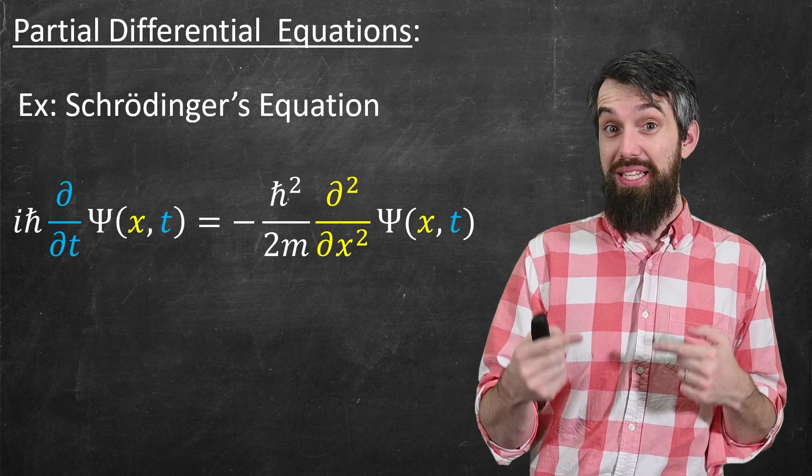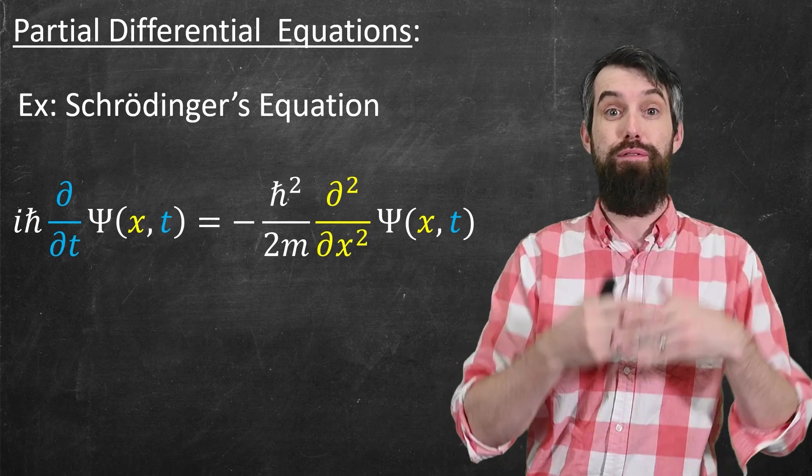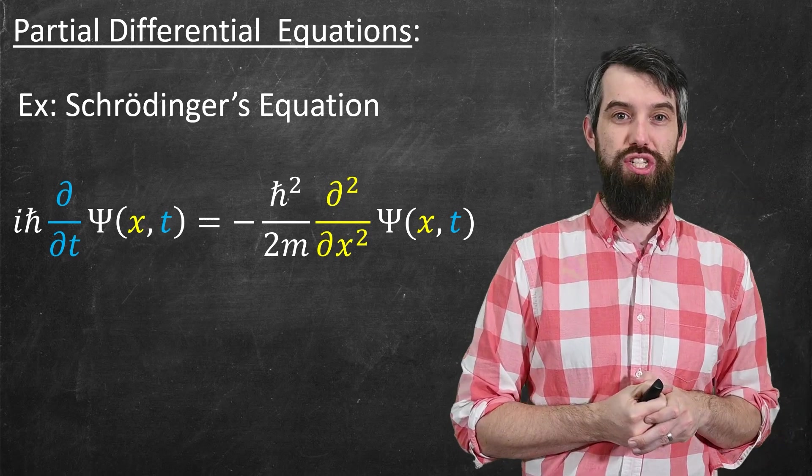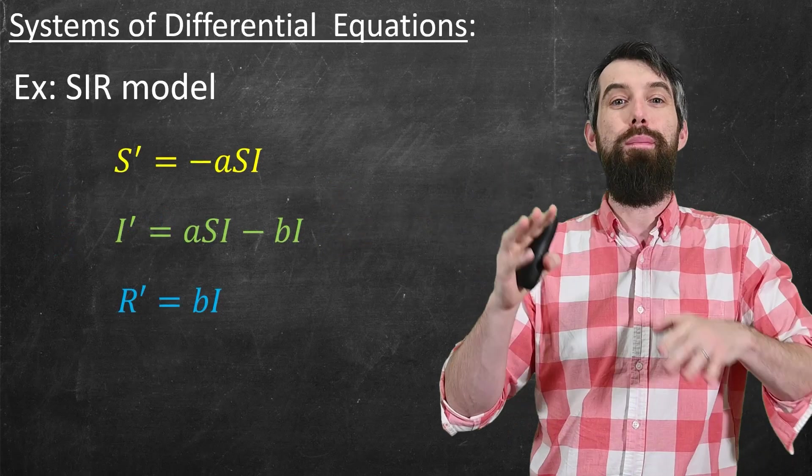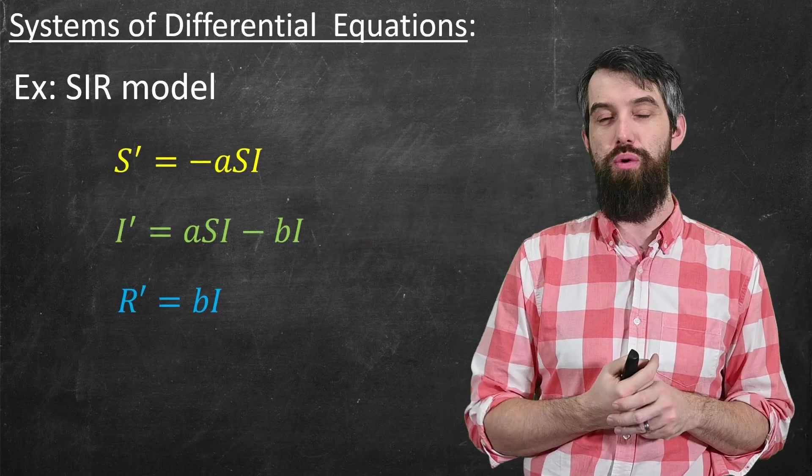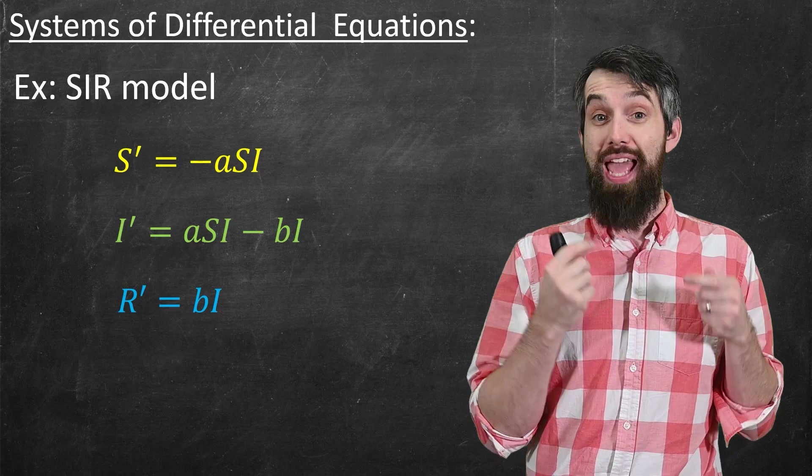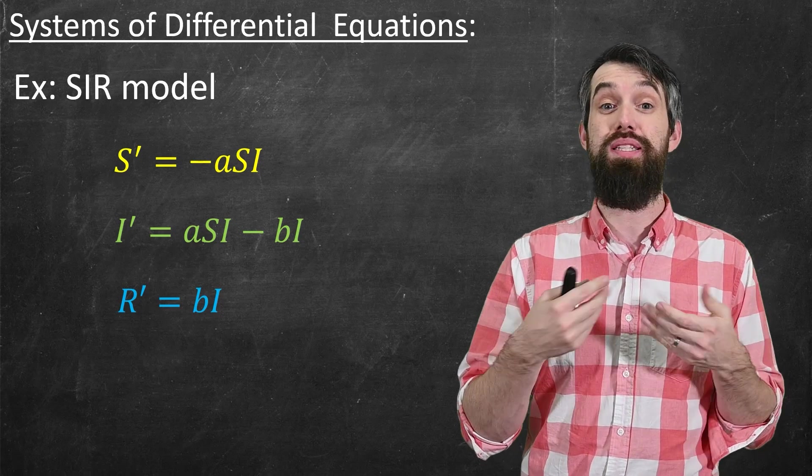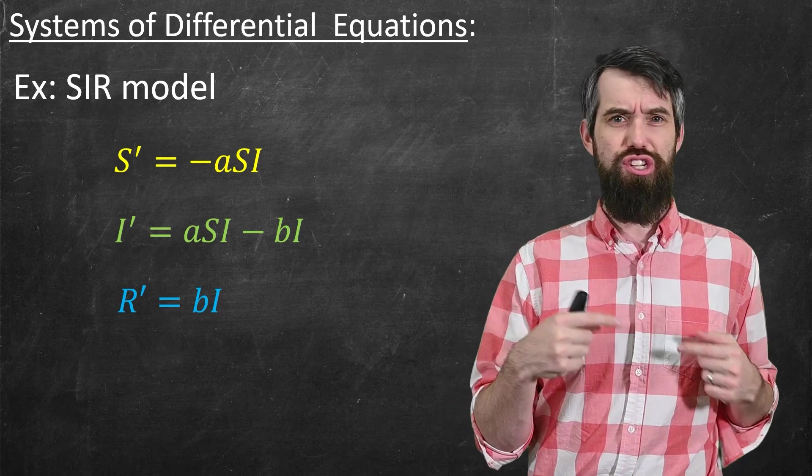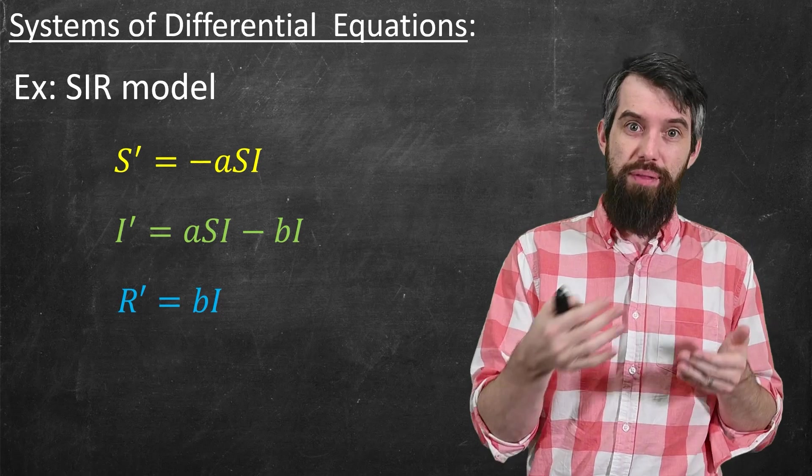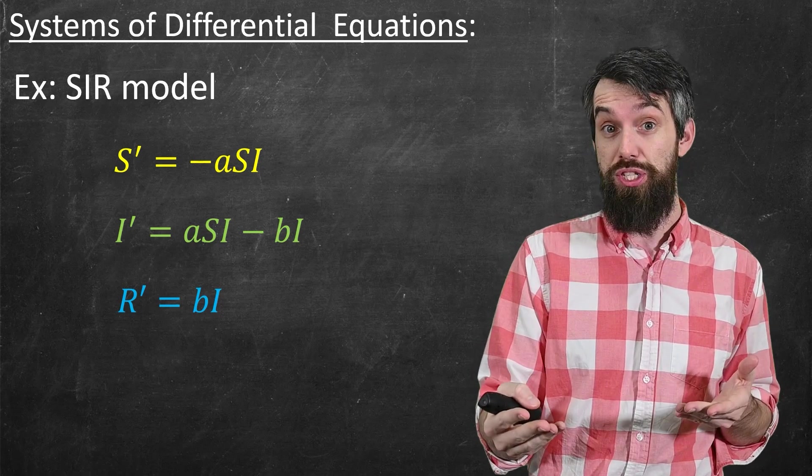The other complexity that can happen, and again, this is going to be something for the future, is systems of differential equations, where you have not one, but multiple different differential equations. These are the equations for the SIR model that helps us study pandemics. I actually have a couple of videos on this model, this system of differential equations, so you're welcome to check that out if you so wish.